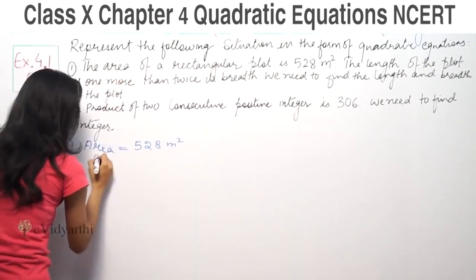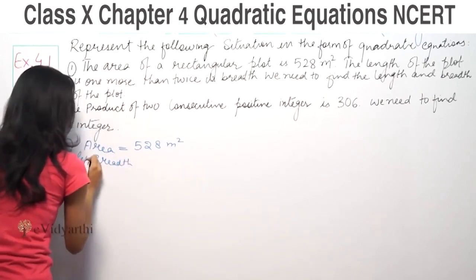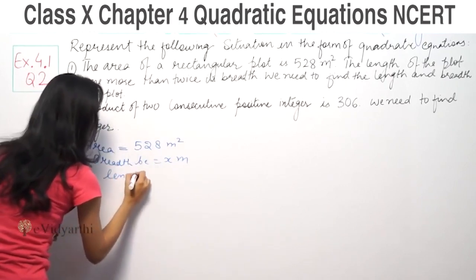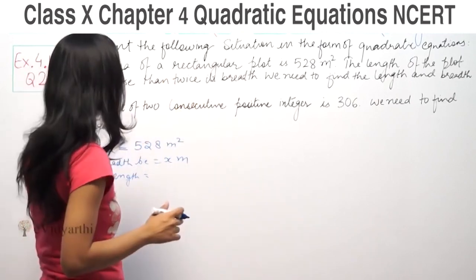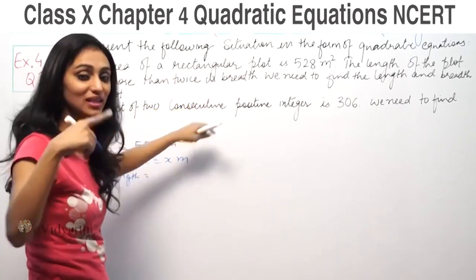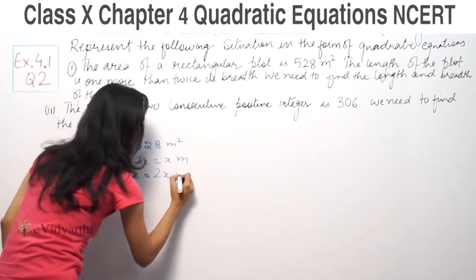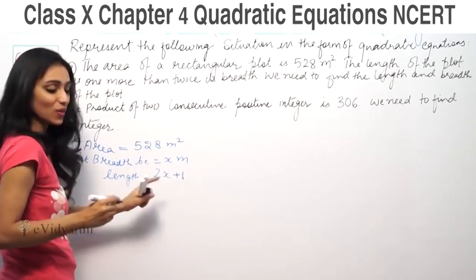The length of the plot is one more than twice its breadth. So we don't know the breadth, let it be x meters. Then what is the length? The length is one more than twice its breadth, so length is 2x plus 1.